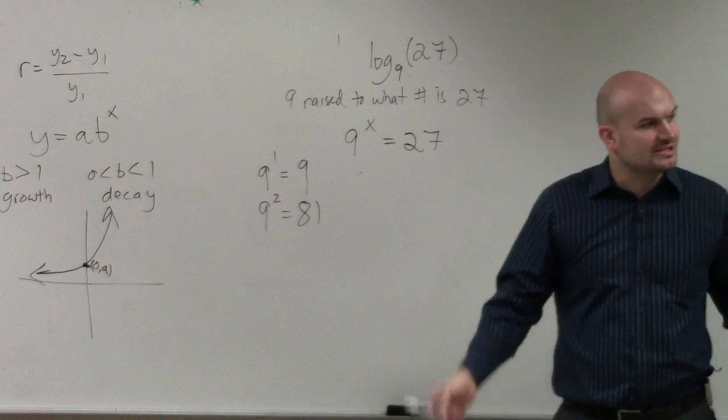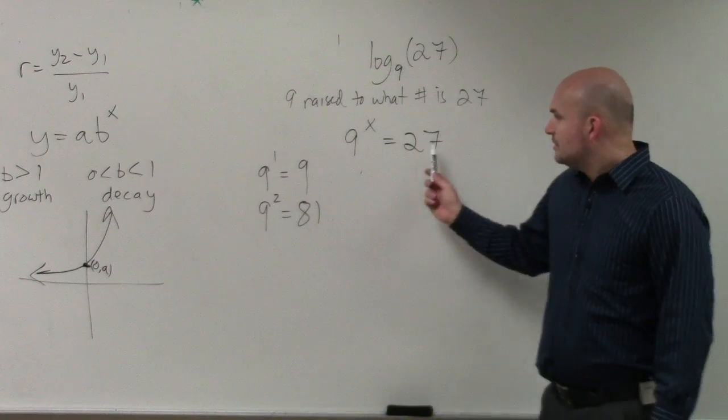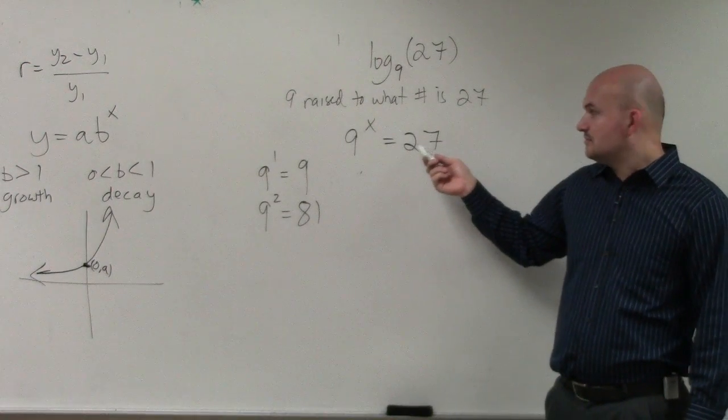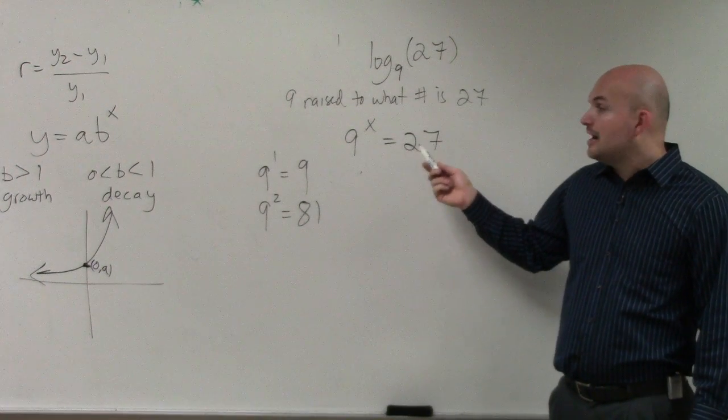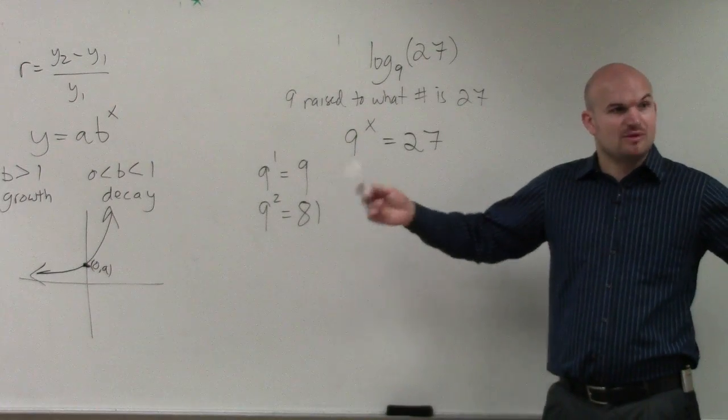What we need to do is use the 1 to 1 property. Can I rewrite 27? Well, I can't write 27 as a base 9. However, can I use another base to represent 9 and 27?